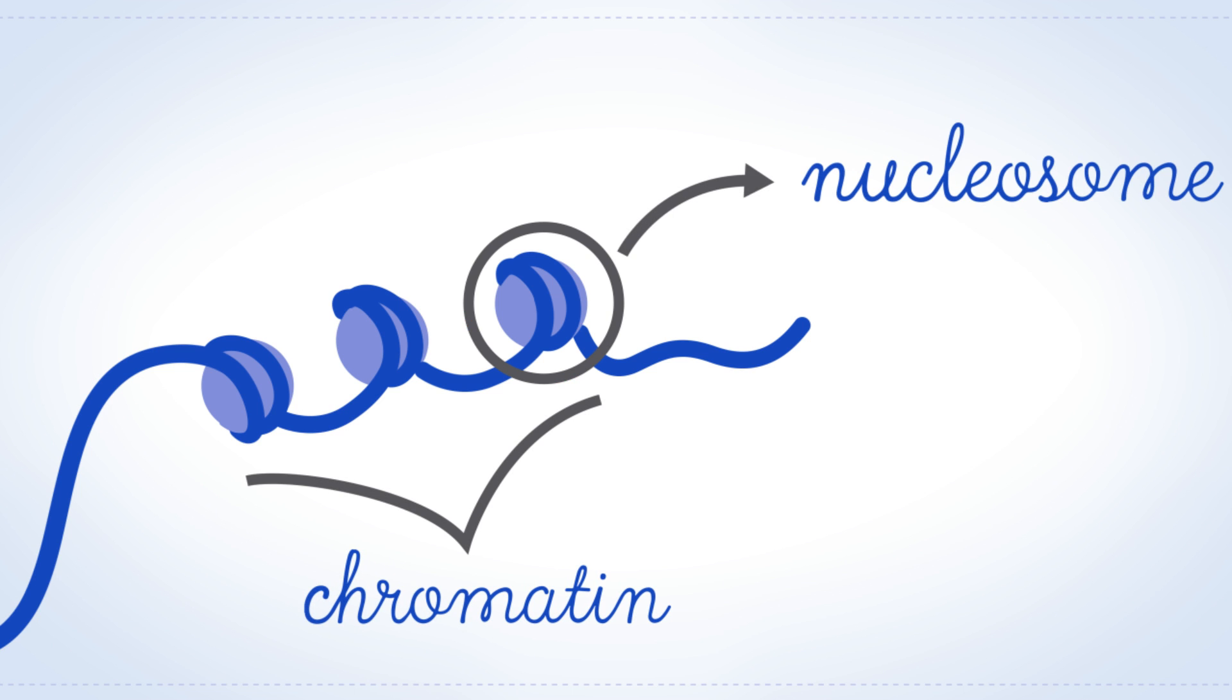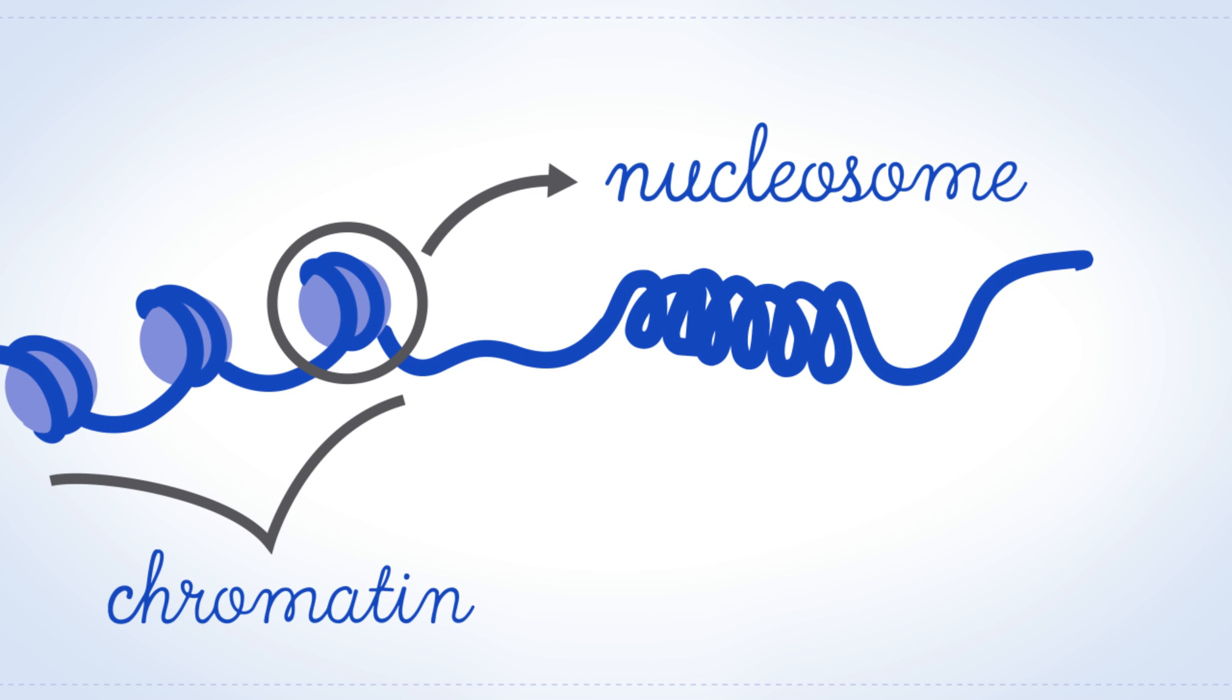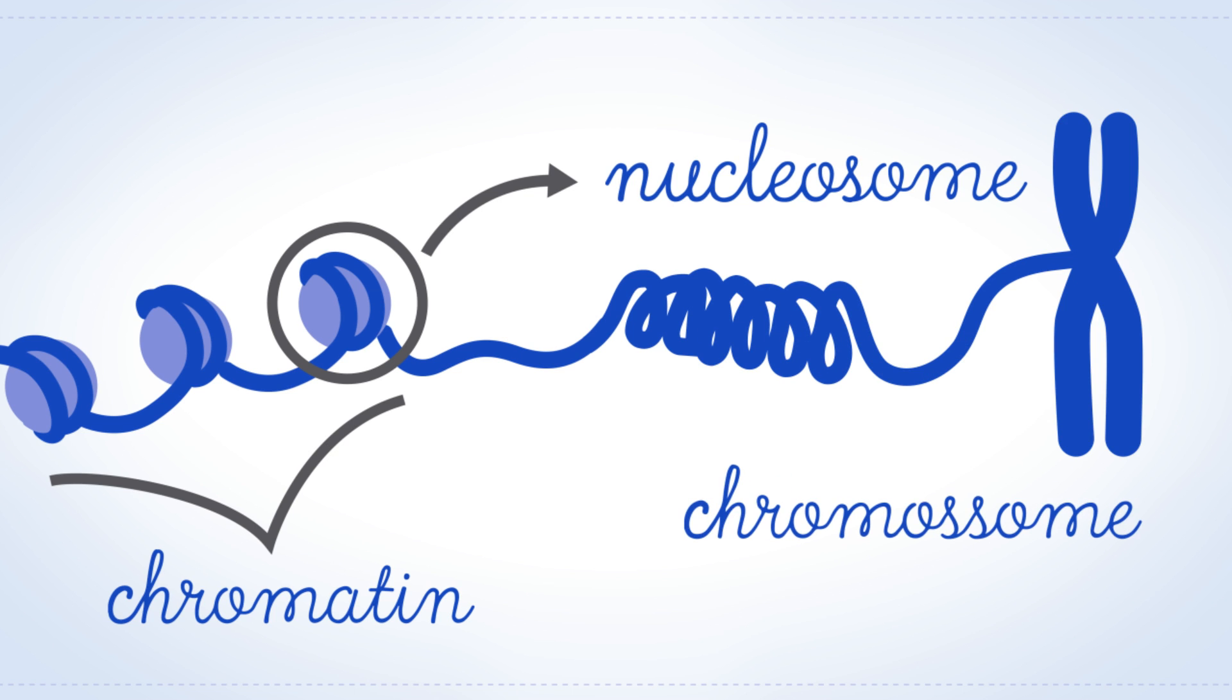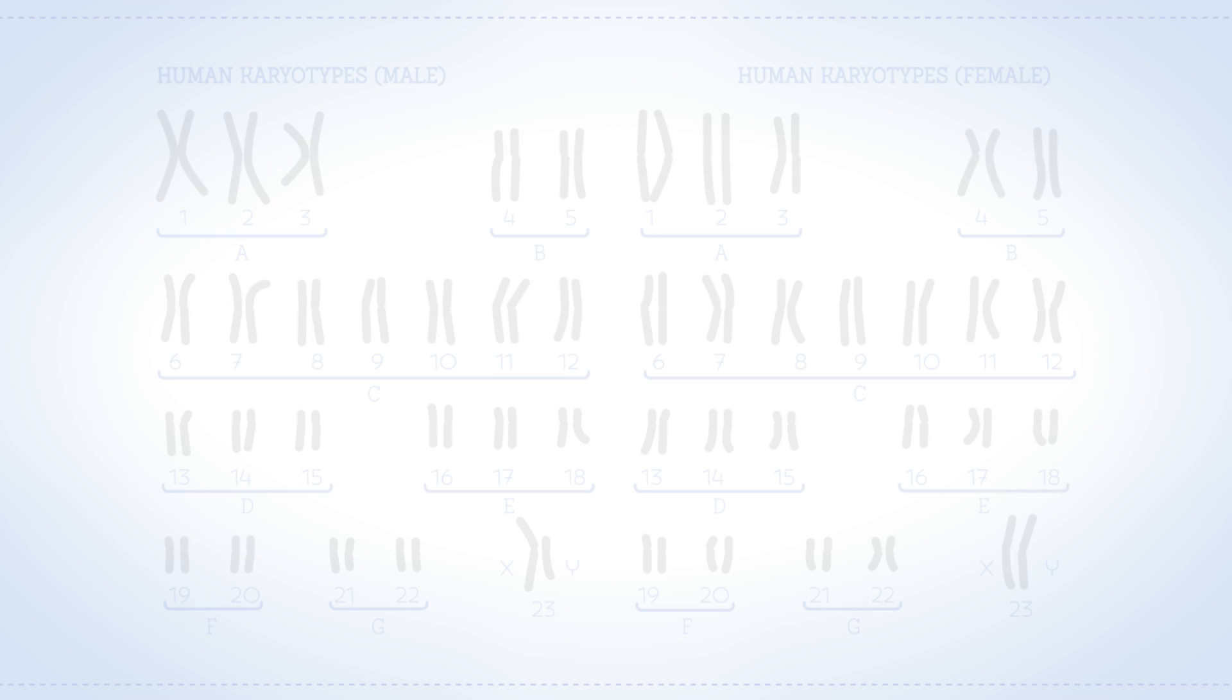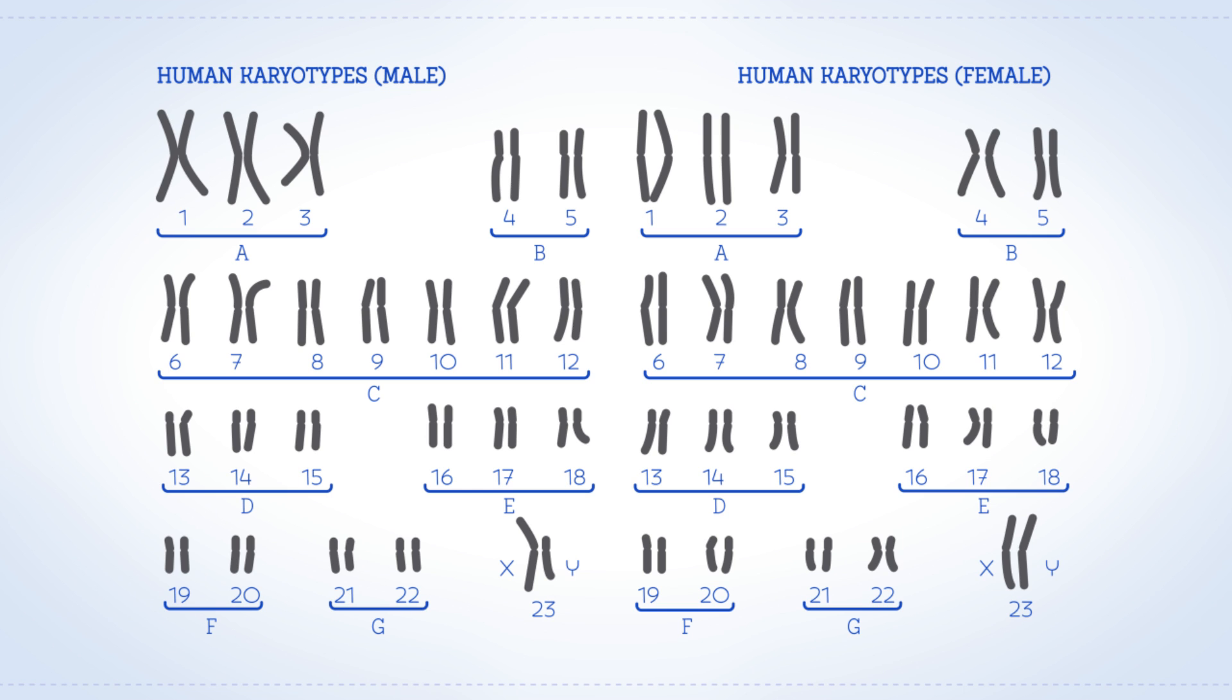The DNA histone complex is called chromatin, and each basic unit is known as a nucleosome. Whenever nucleosomes are tightly packed, we call the resulting structure a chromosome. Each human cell has 46 chromosomes, 23 from each parent. These 46 chromosomes are what we call our genome.